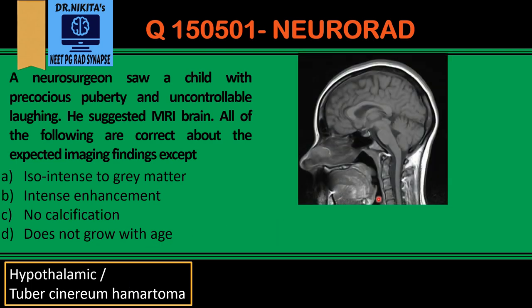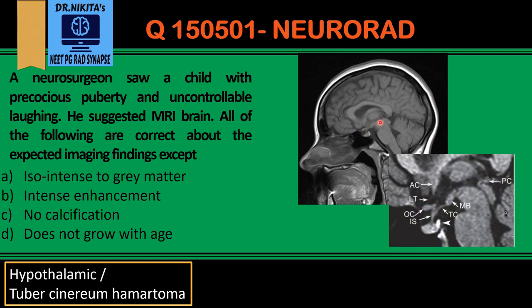First, where is the tuber cinereum? This is the region of the hypothalamus. Looking at the zoomed image: that is the mammillary body, this is the pituitary gland, this white thing is the posterior pituitary, leading to the infundibular stalk. Between the infundibular stalk and the mammillary body is the region of the tuber cinereum of the hypothalamus — this is where the hamartoma occurs.